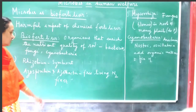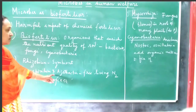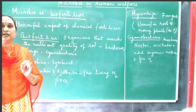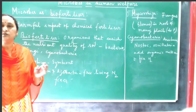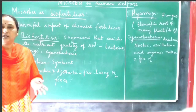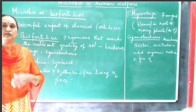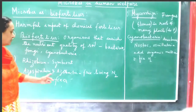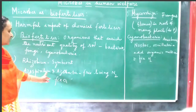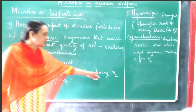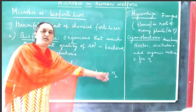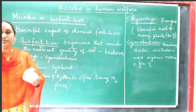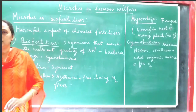These free-living nitrogen-fixing bacteria — Azospirillum and Azobacter — can also fix molecular nitrogen. Plants cannot directly use molecular nitrogen, so the bacteria convert atmospheric molecular nitrogen into nitrates and provide them to the plants.